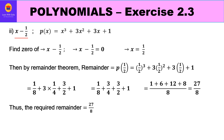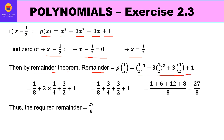In the second part, the divisor is x − 1/2 and the given polynomial is x³ + 3x² + 3x + 1. Finding the zero of x − 1/2 by equating to zero gives x = 1/2. By the Remainder Theorem, the remainder is the value of the polynomial at x = 1/2: (1/2)³ + 3(1/2)² + 3(1/2) + 1 = 1/8 + 3/4 + 3/2 + 1. Taking LCM and simplifying gives 27/8 as the required remainder.